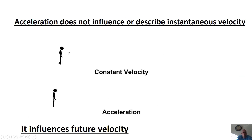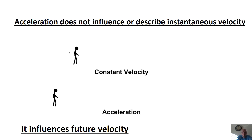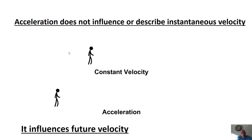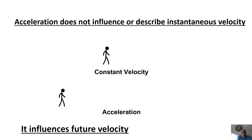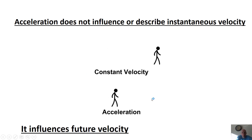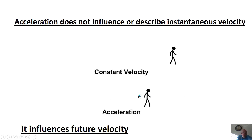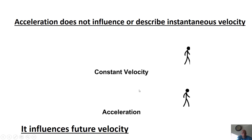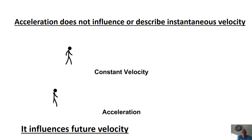Remember: in any question, acceleration does not describe instantaneous velocity. If you have a really high acceleration, that doesn't mean you're going fast right now — you might be going very slow. It influences future velocity, but has nothing to do with current velocity. So even if you see a huge acceleration like a gazillion meters per second squared, the object can still be going really slowly or even going backwards.